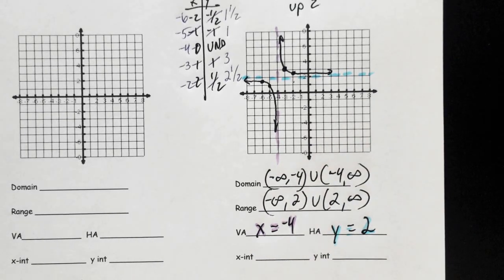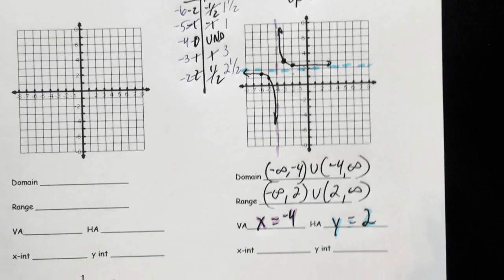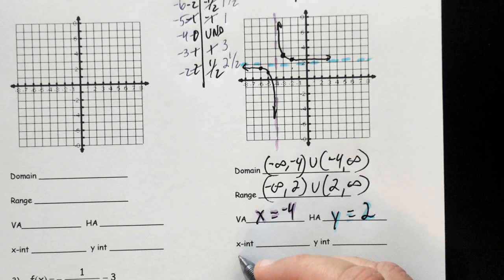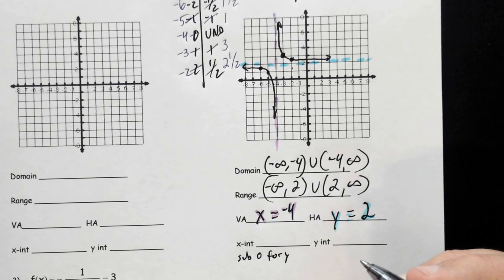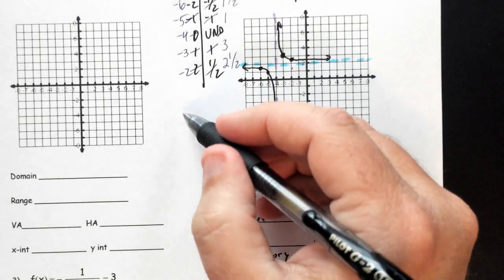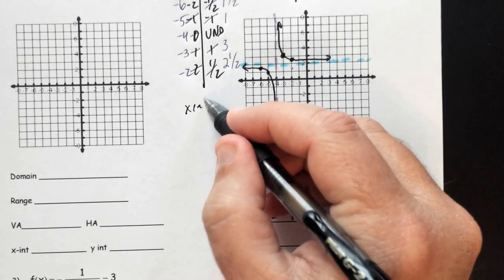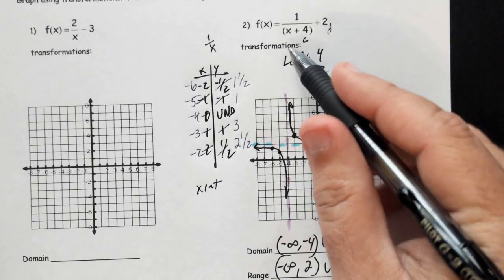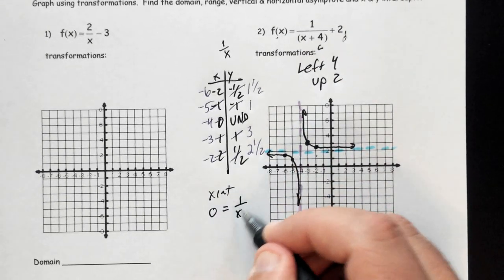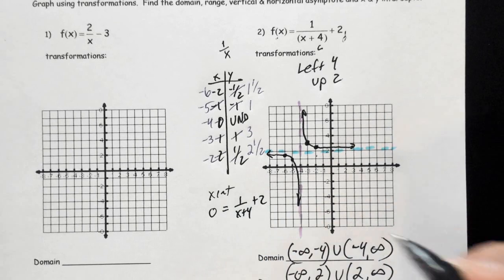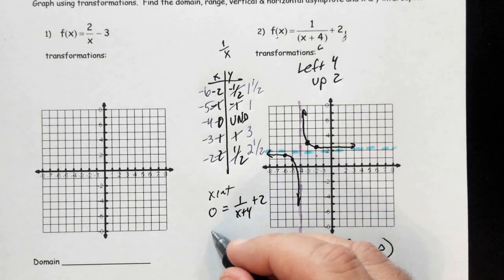Now, the other two things we have to talk about are the x-intercept and the y-intercept. Remember that your x-intercept, you're going to sub zero for y. So we're going to do that over here for the x-intercept. We're going to put zero for y. Now, remember our y value is the f(x), correct? So it's going to be 0 = 1/(x+4) + 2.